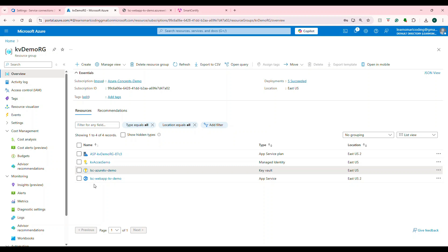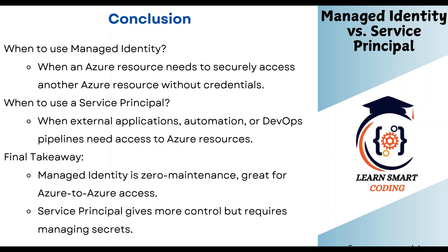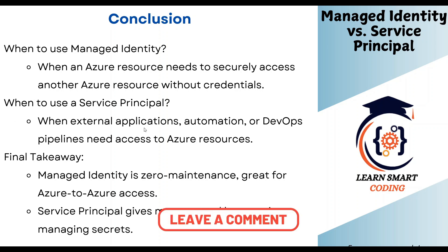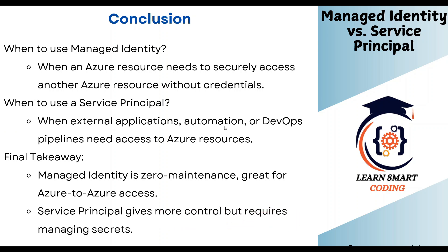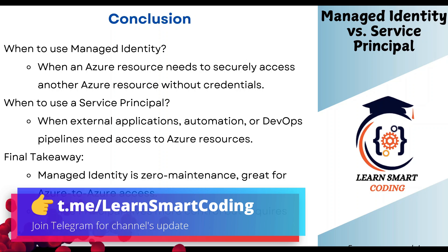Now you know the difference between service principal and managed identity. When to use managed identity: if an Azure resource needs to securely access another Azure resource without any credential, go for managed identity. When to use a service principal: any external applications, automations, or DevOps pipelines that need access to an Azure resource — like deploying code from a CI/CD pipeline to an Azure web app. The takeaway is: managed identity is zero maintenance and great for Azure-to-Azure access, while service principal gives more control but requires managing the secrets.